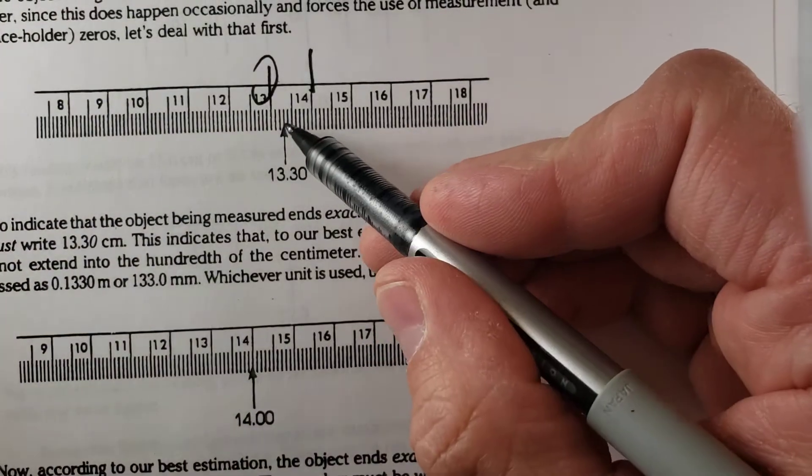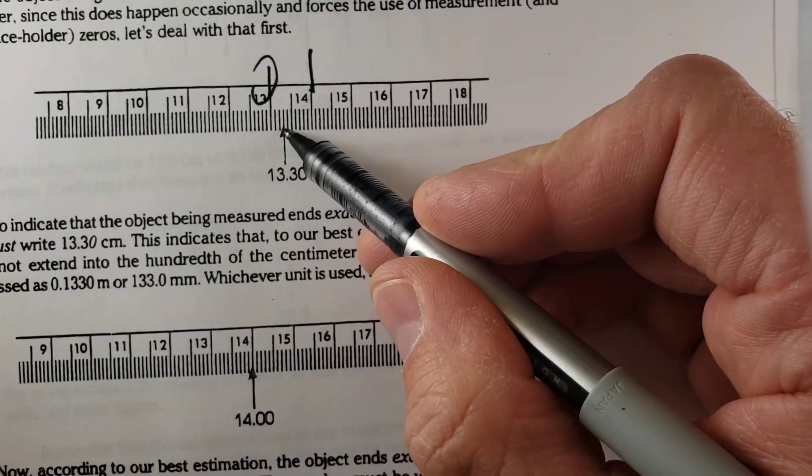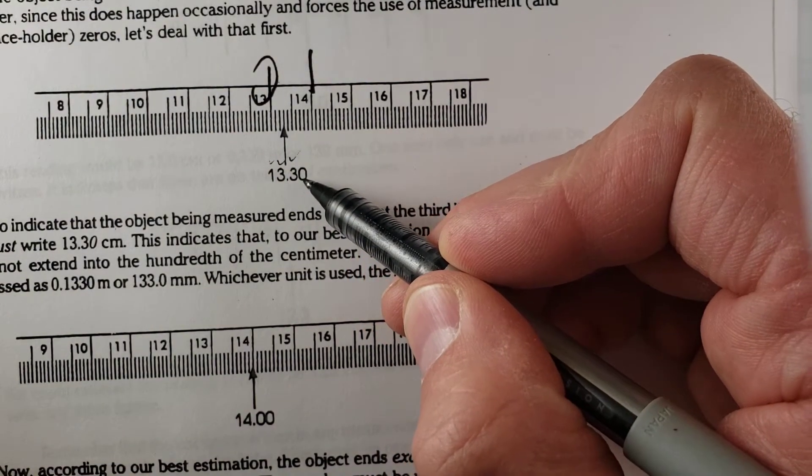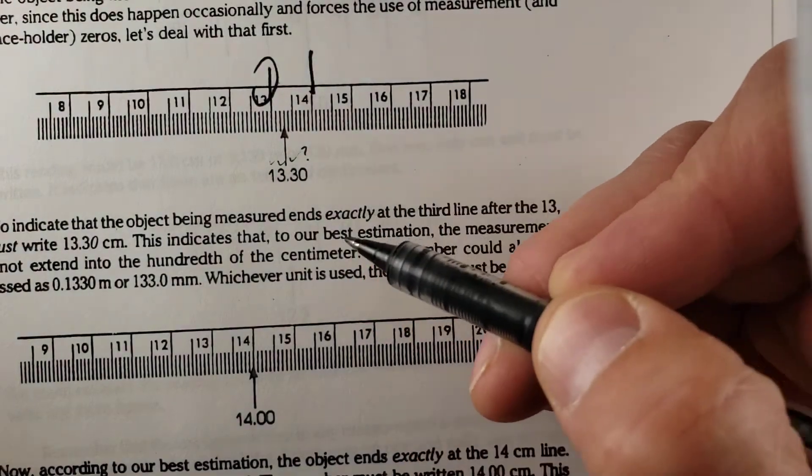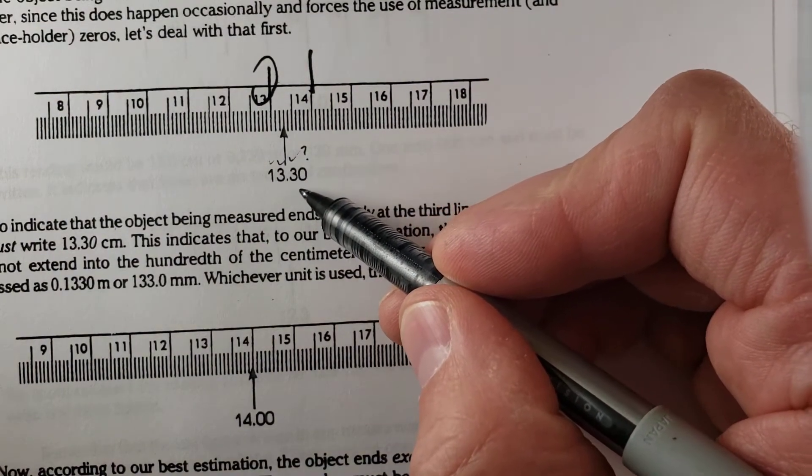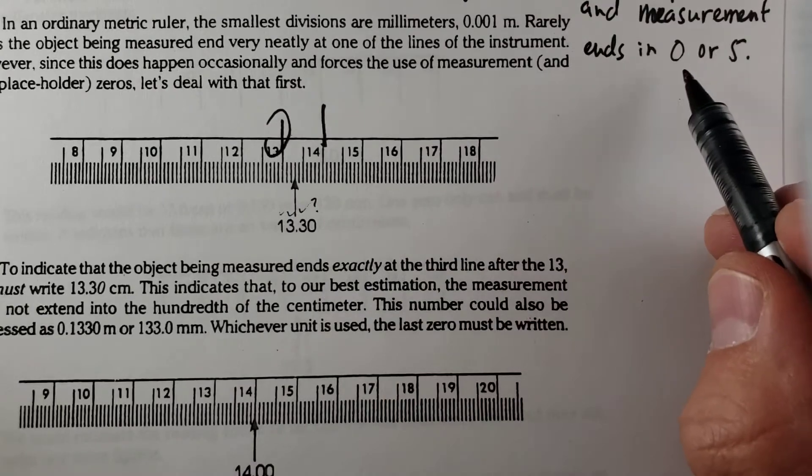If we look at this one, it's on the 13.3 line. And since it's directly on the line, we add that extra zero, indicating that it's not halfway in between. It ends in zero. So if it falls on the line, it's going to end in zero.